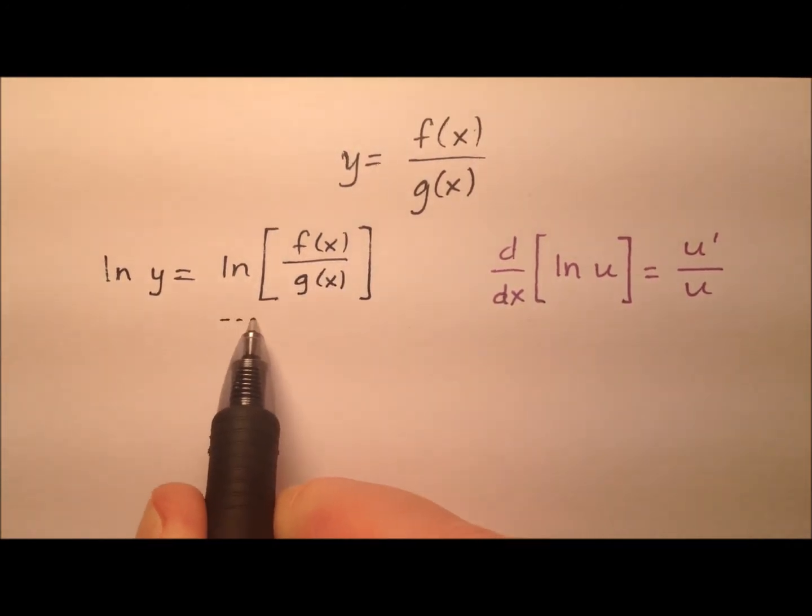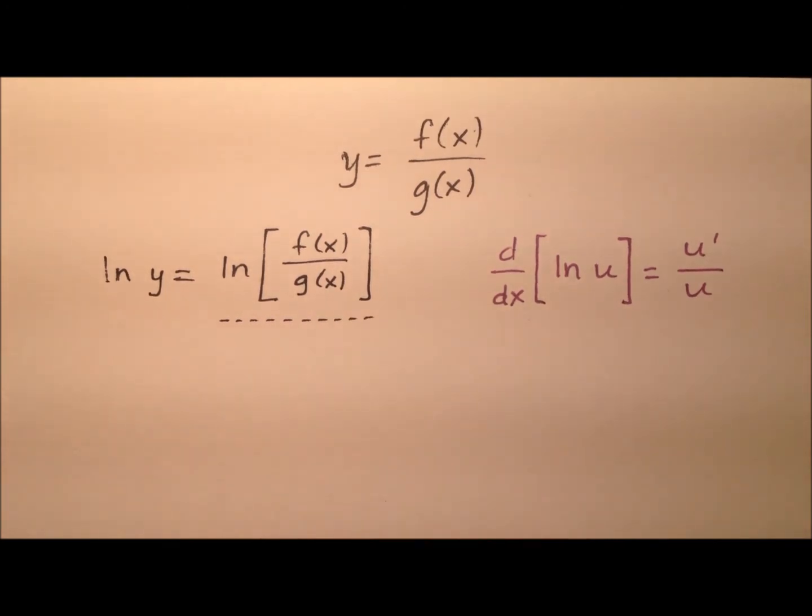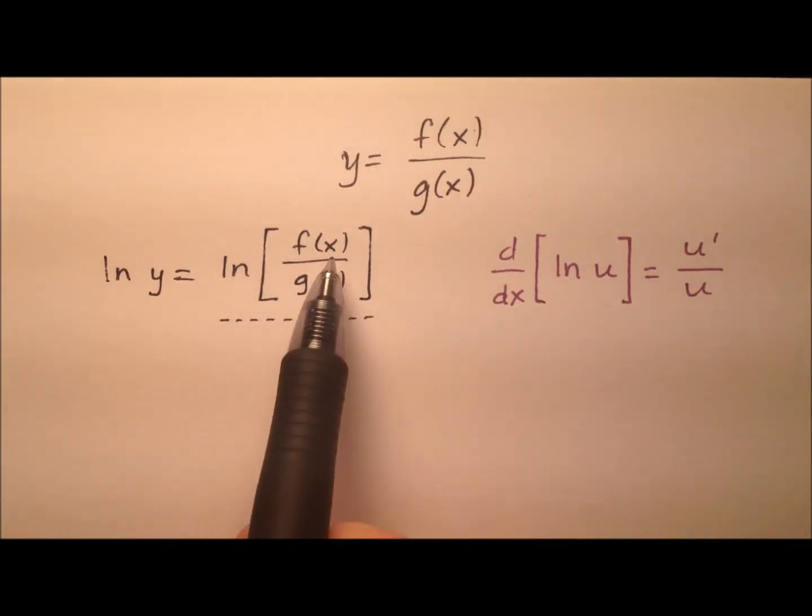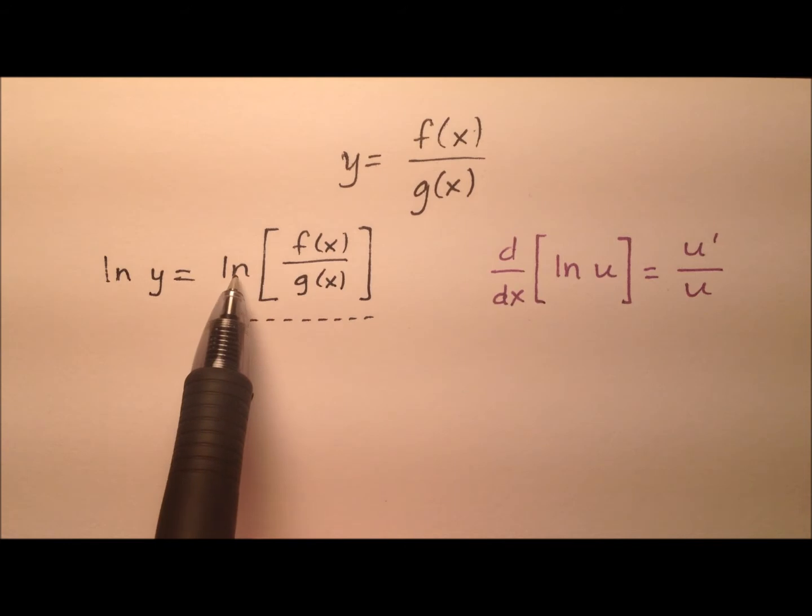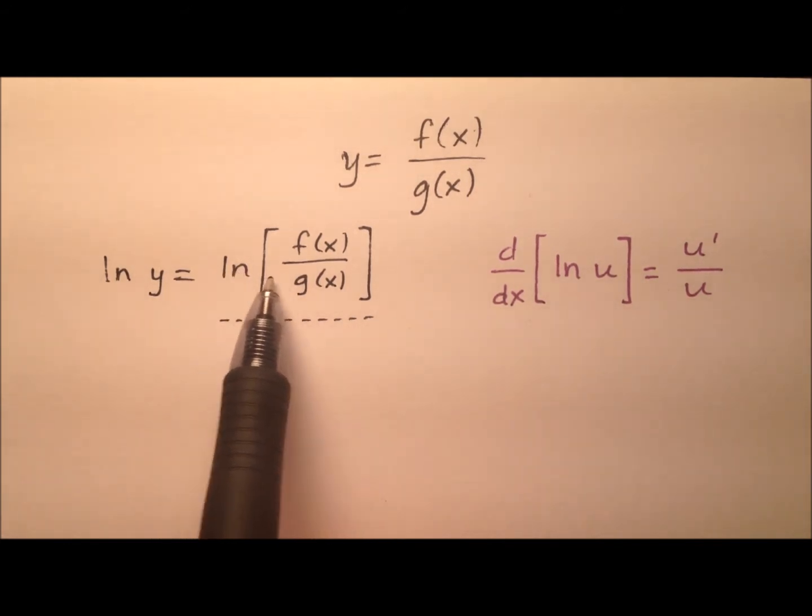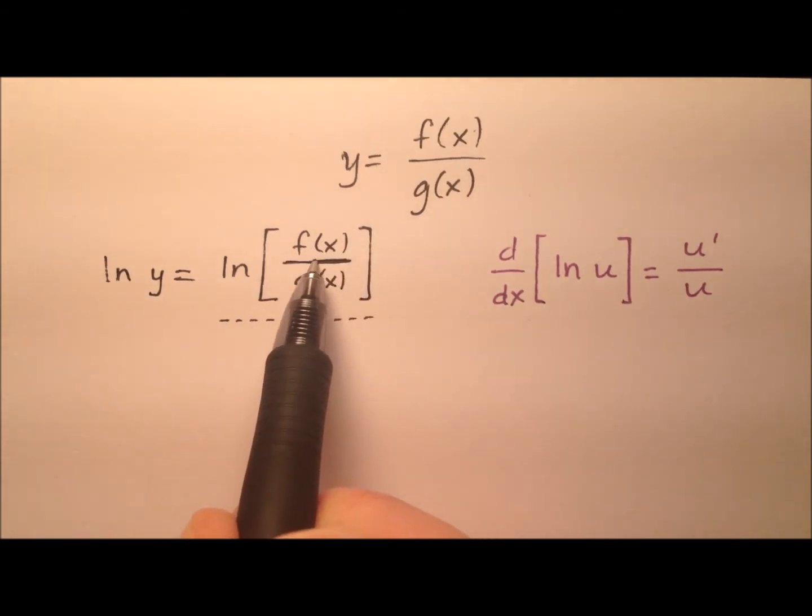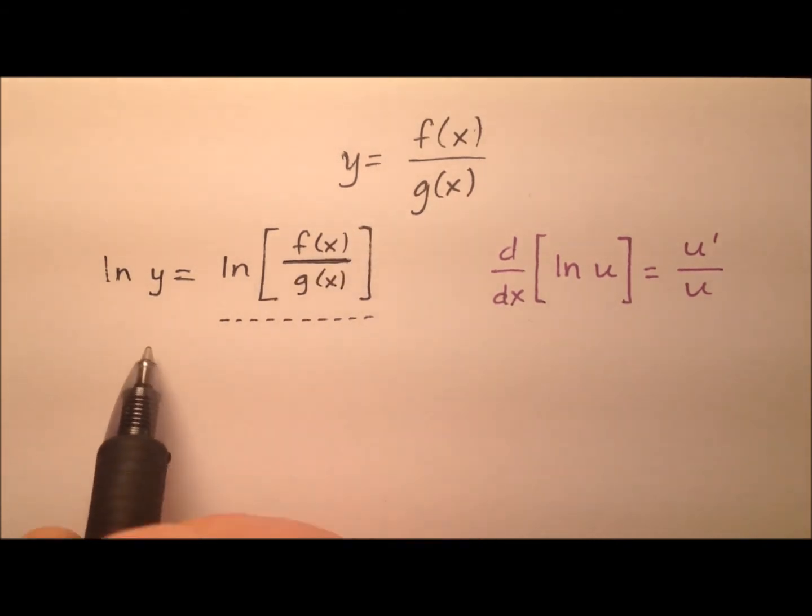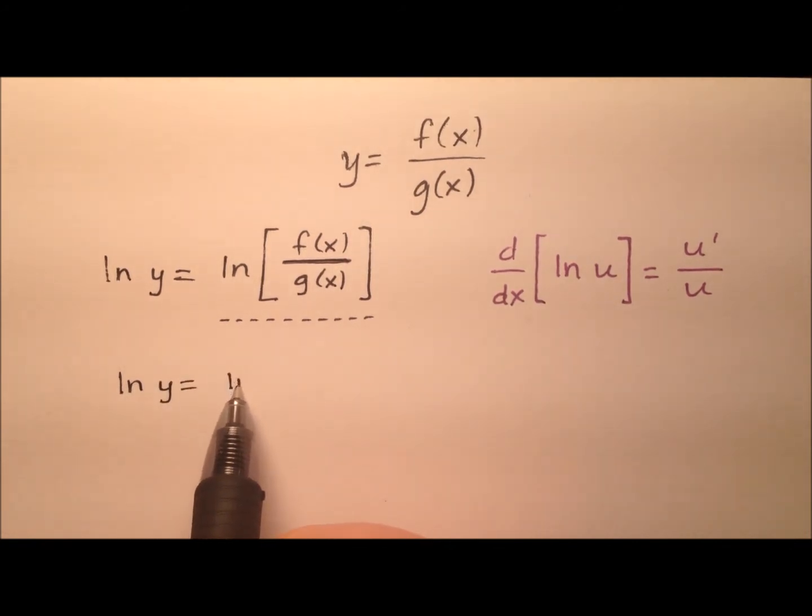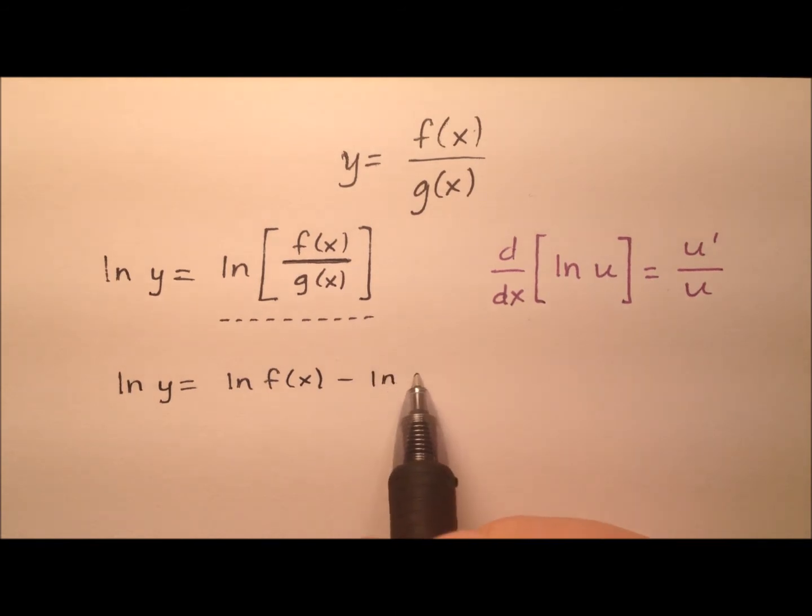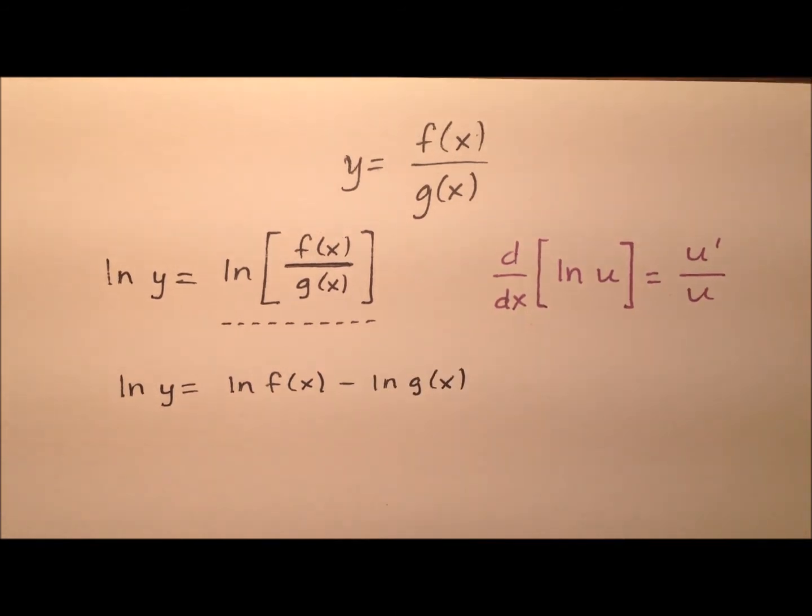So at this point, I can use a property for logs, which says that if I have the quotient inside of one log like this, I can go ahead and expand that as the subtraction or the difference of two distinct logs. So let's go ahead and do that. So I have the natural log of y equals the natural log of f of x minus the natural log of g of x.